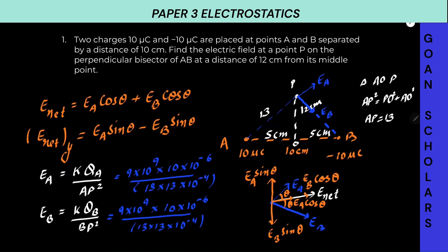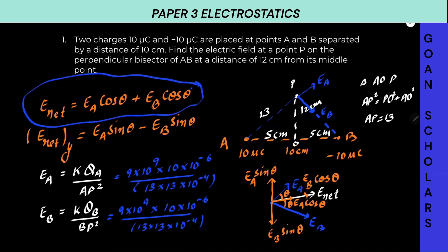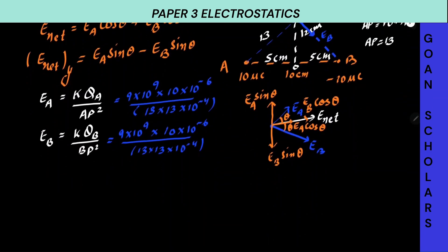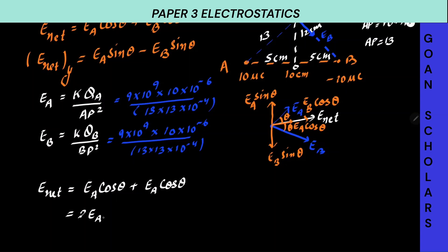Looking at EA and EB: magnitude-wise, EA equals EB. So the net field along the Y axis will be zero — because the sinθ components cancel out due to the negative sign. While along the X axis, the components add up. So E net along X will be EA cosθ + EA cosθ, which equals 2EA cosθ.